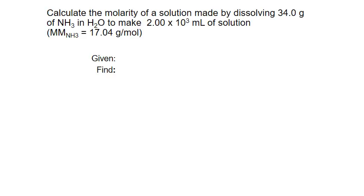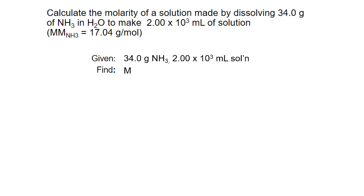Let's do a sample calculation of molarity. We'll look at a solution made by dissolving 34 grams of ammonia (NH3) in water, which is our solvent, to make 2.00 × 10³ milliliters of solution — that's the same as 2,000 milliliters. We start by figuring out what we're given and what we're trying to find. We're given the mass of our solute ammonia and the total volume of the solution.